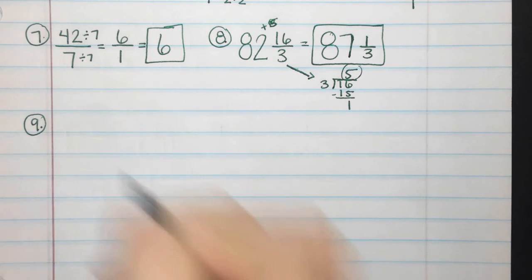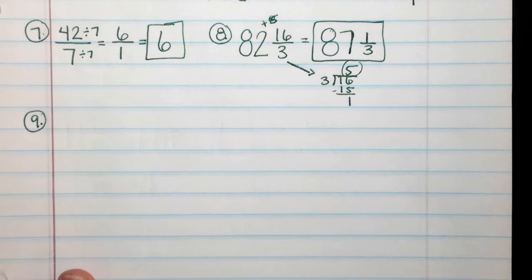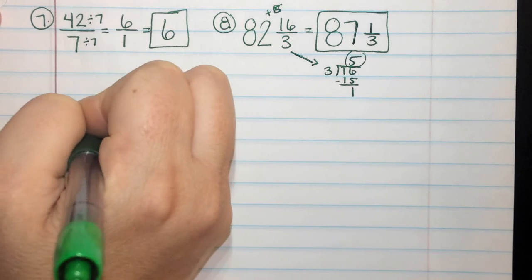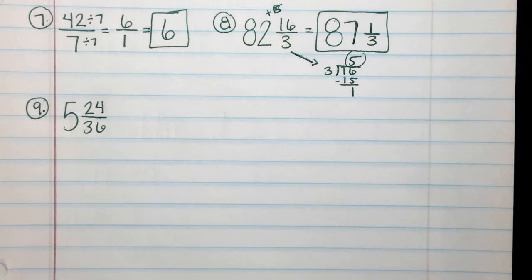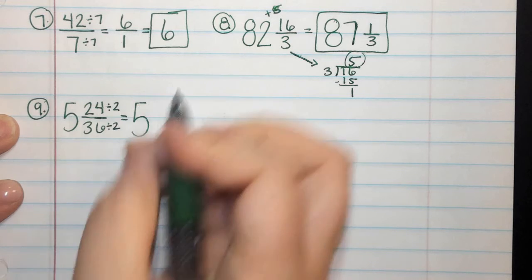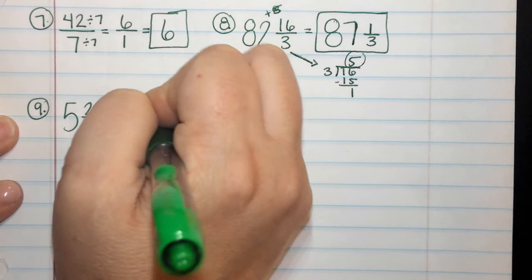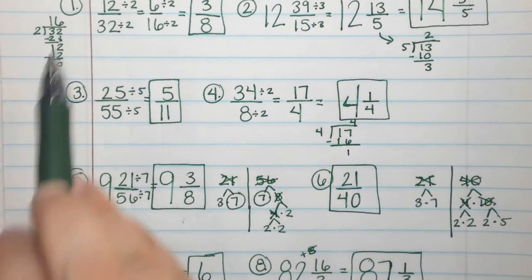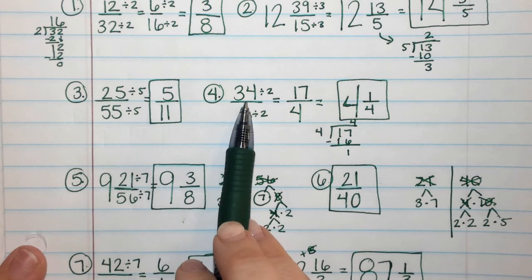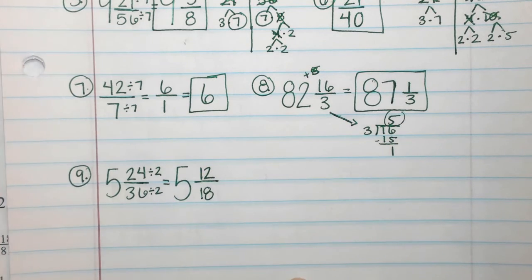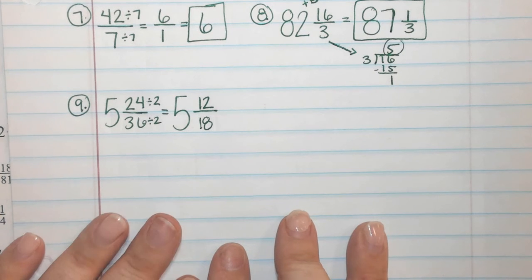Number 9. We have 5 and 24 over 36. All right, someone new. I need a new hand that hasn't answered yet today. What can I simplify these by? Noah? 2. So 5 is still there. 24 divided by 2 is 12. 36 divided by 2 is 18. So guys, I want us to look back at our old work because this is something that I do a lot to help me. I already did 32. 32 gave me 16. 34 gave me 17. So 36 is going to give me 18. Counting by 2 is right?